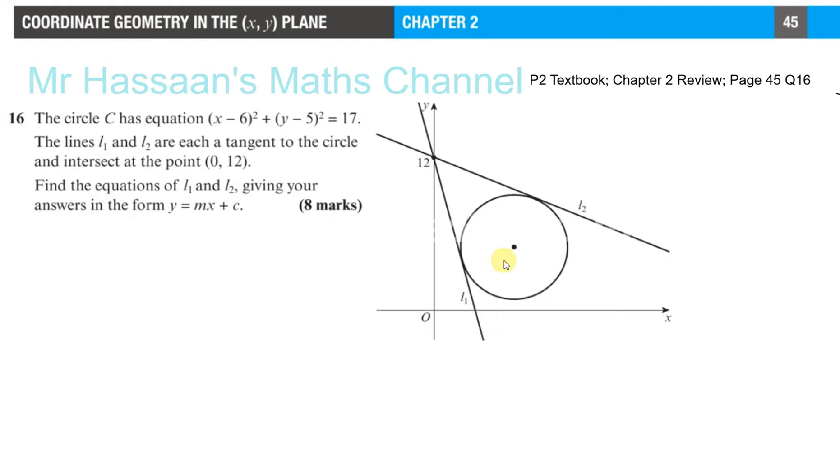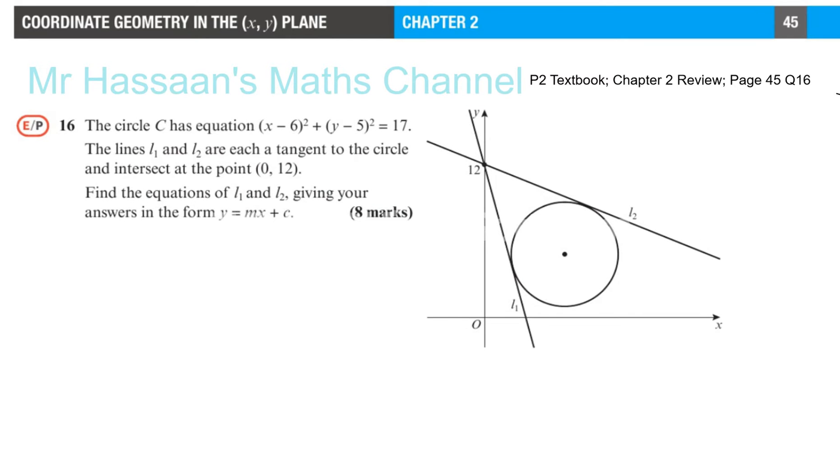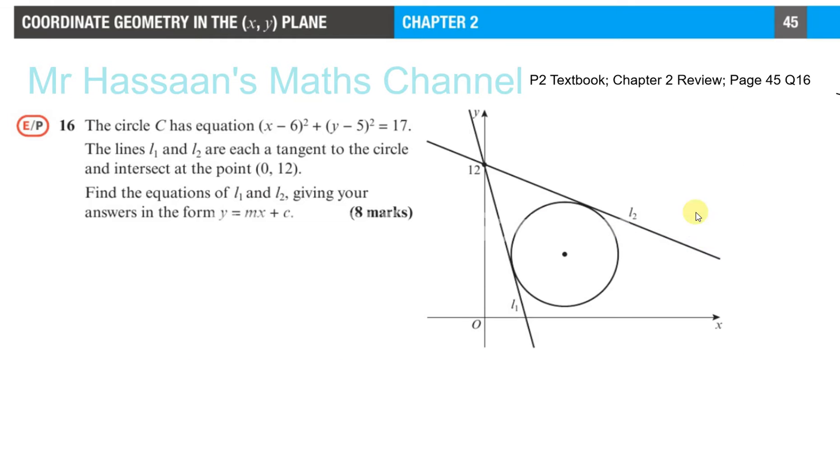So we know the center of the circle is (6, 5). That's the center at (6, 5). That's what we know. What else do we know?